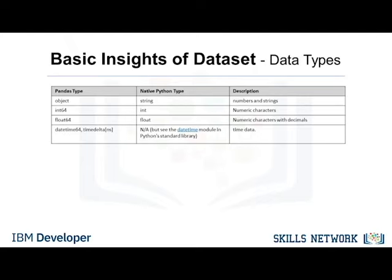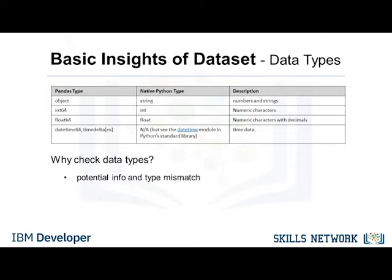Data has a variety of types. The main types stored in Pandas objects are Object, Float, Int, and DateTime. The data type names are somewhat different from those in native Python. This table shows the differences and similarities between them. Some are very similar, such as the numeric data types Int and Float. The Object Pandas type functions similar to String in Python, while the DateTime Pandas type is a very useful type for handling time series data. There are two reasons to check data types in a dataset. Pandas automatically assigns types based on the encoding it detects from the original data table, but for a number of reasons this assignment may be incorrect.